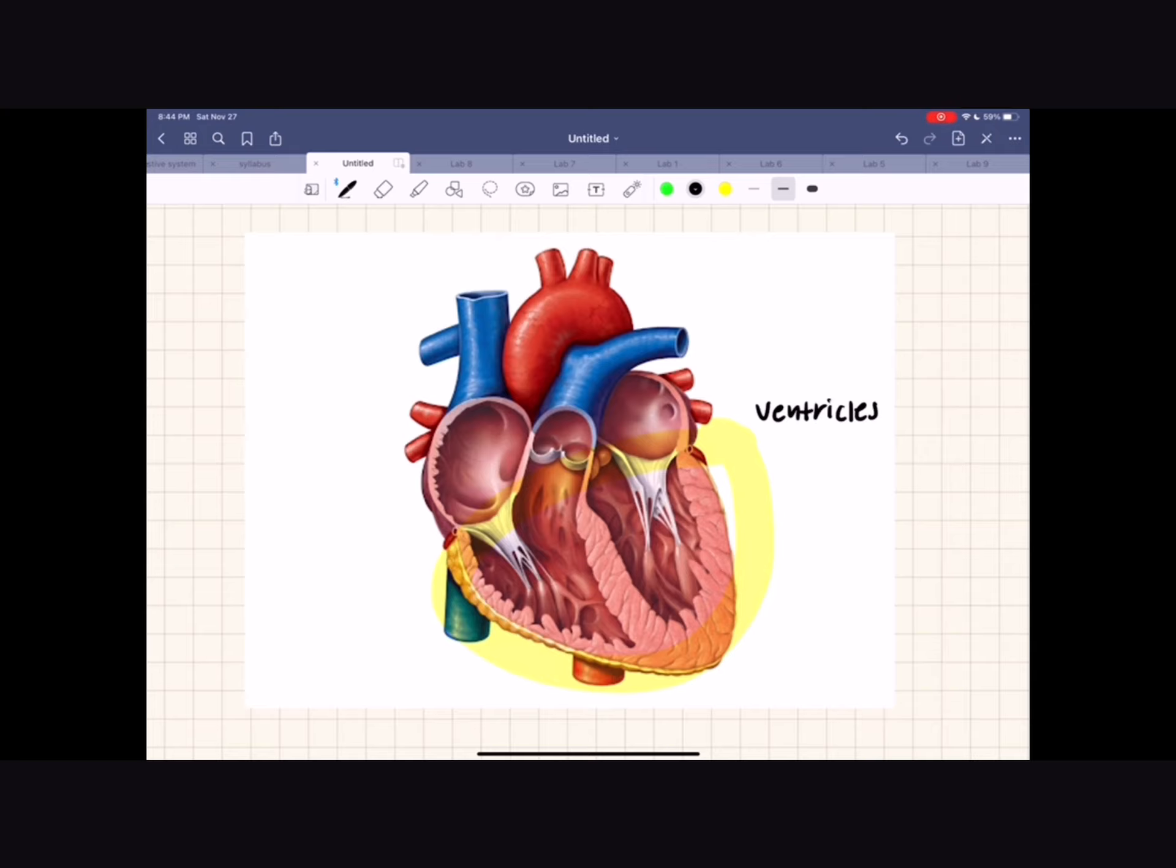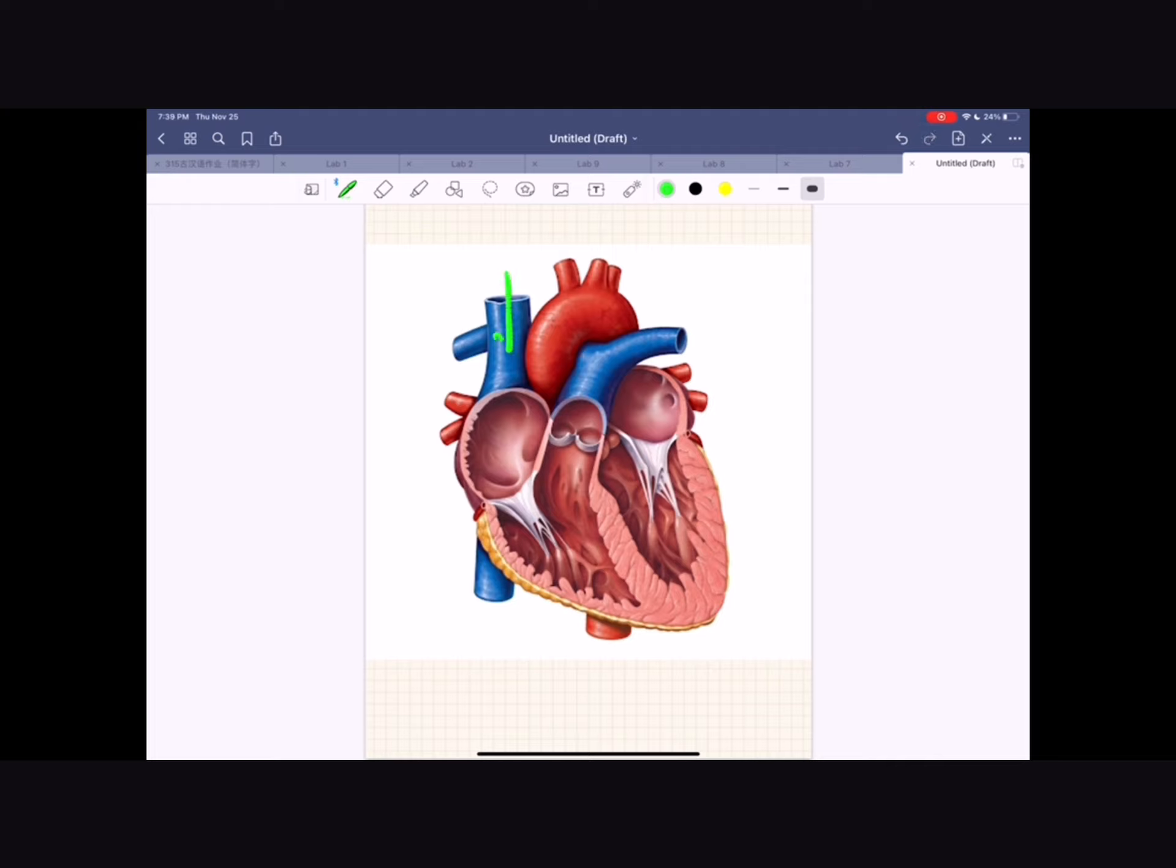Circulation begins when deoxygenated blood returns to the right atrium of the heart from the body and enters into the right ventricle. The right ventricle then pumps the blood into the lungs through pulmonary circulation, oxygenating the blood. After that, the oxygenated blood returns from the lungs to the left atrium of the heart, which pushes it into the left ventricle. Then, the left ventricle pumps the oxygenated blood throughout the body into the systemic circulation.